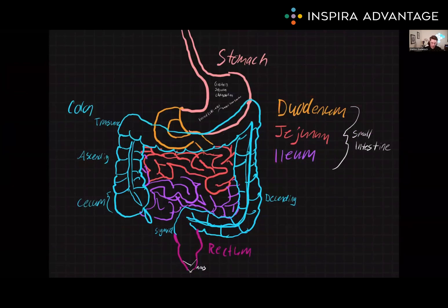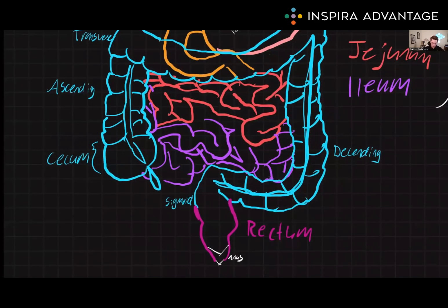Now we're done with the small intestine and are going to begin talking about the large intestine. After passing through the small intestine, indigestible material moves into the large intestines. The large intestine, also known as the colon, is the final segment of the digestive tract. It is divided into several regions, including the cecum, colon, rectum, and anus.